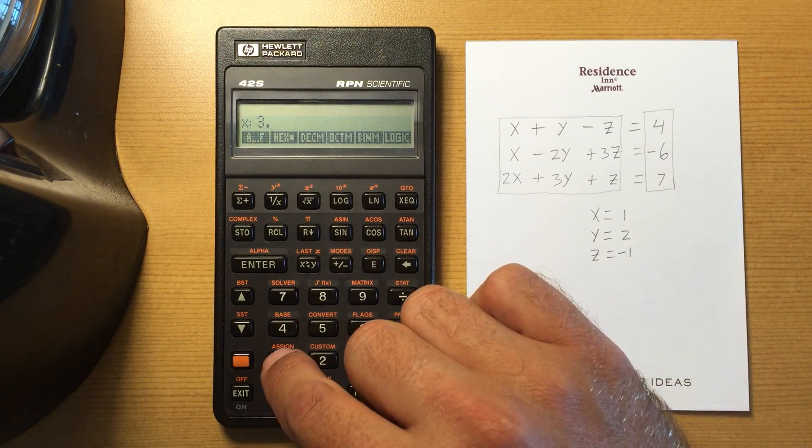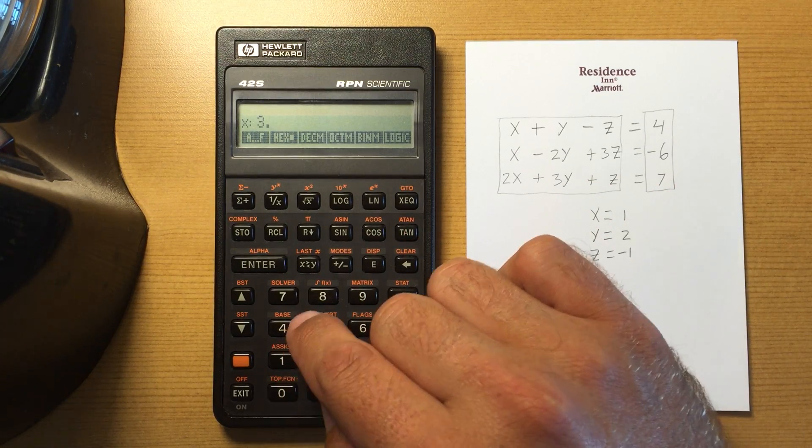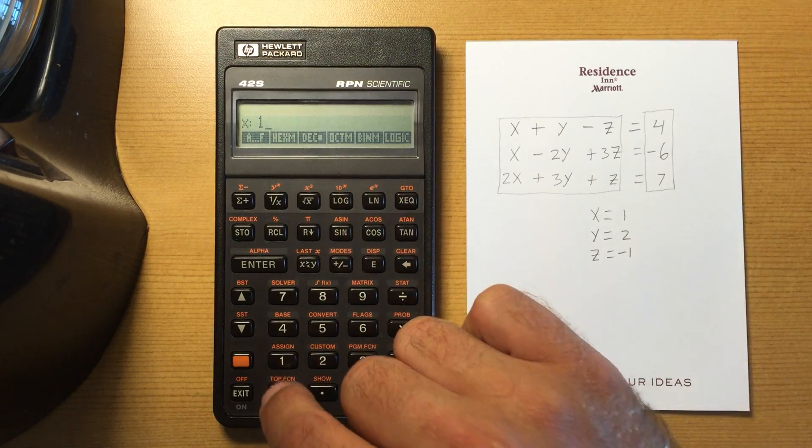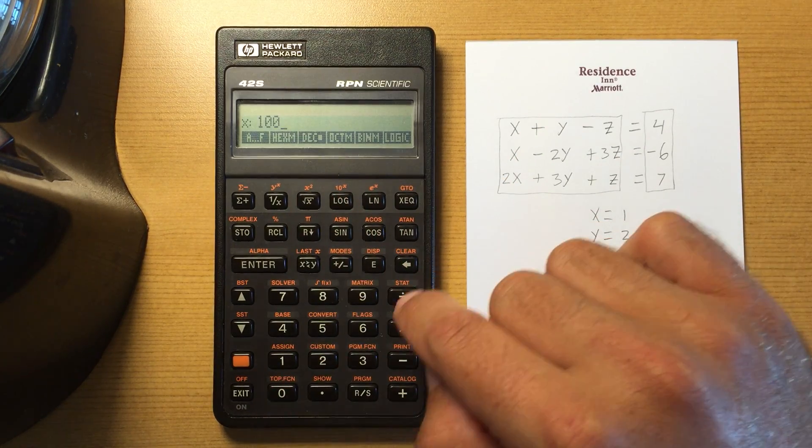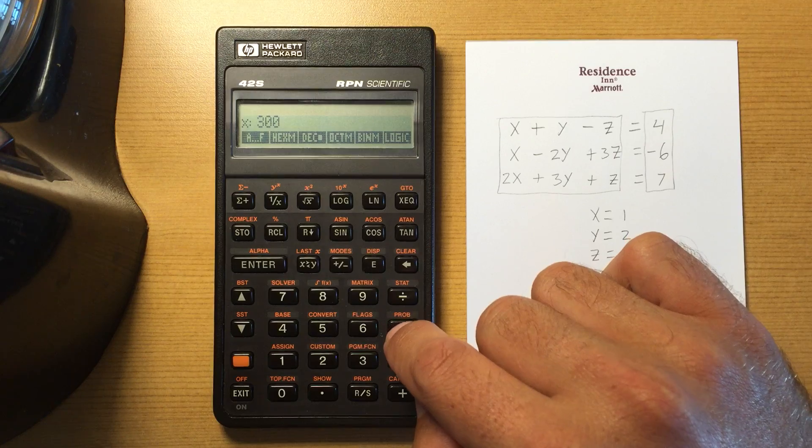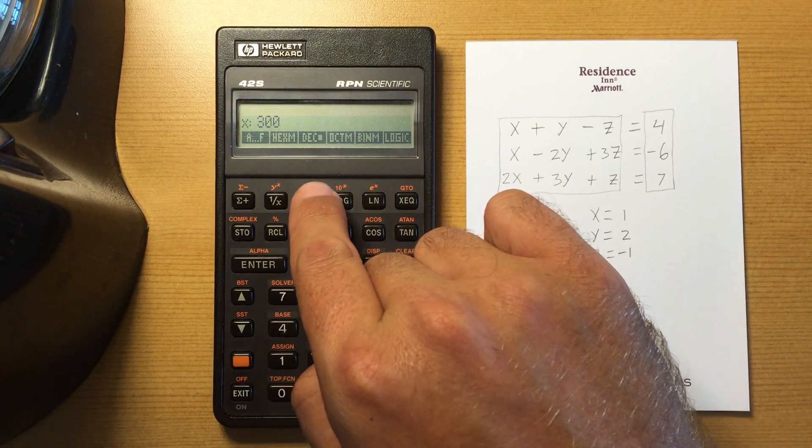So if I multiply this by 10, it's multiplied by 10, and 100.